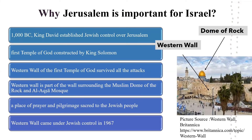Why is Jerusalem important for Israel? According to the Hebrew Bible, in 1000 BC, King David established Jewish control over Jerusalem. King Solomon, son of King David, constructed the first temple of God in Jerusalem. The city of Jerusalem fell in and out of many hands during the next couple of millennia. The West Wall of the first temple of God survived all the attacks. The Western Wall is a part of the wall surrounding the Dome of the Rock and Al-Aqsa Mosque. The Western Wall is a place of prayer and pilgrimage sacred to the Jewish people. The Western Wall finally came under Jewish control in 1967.